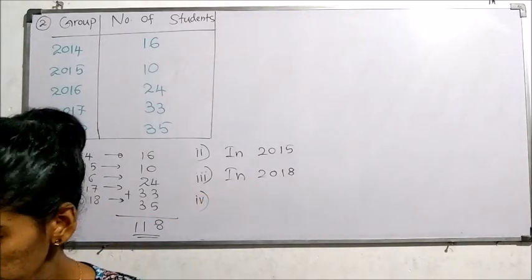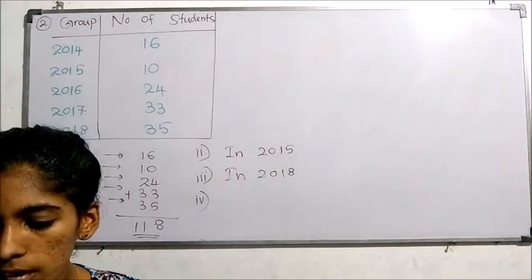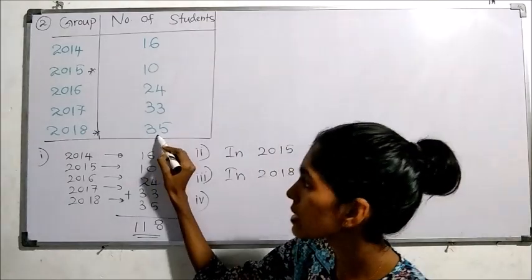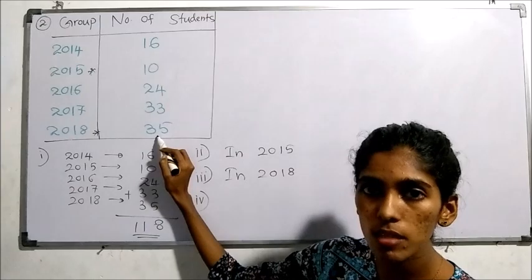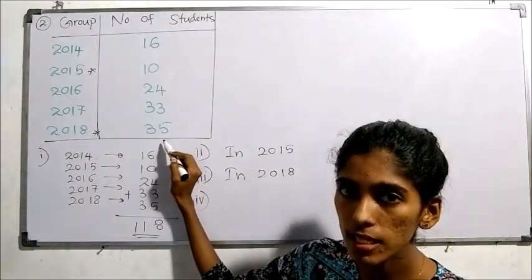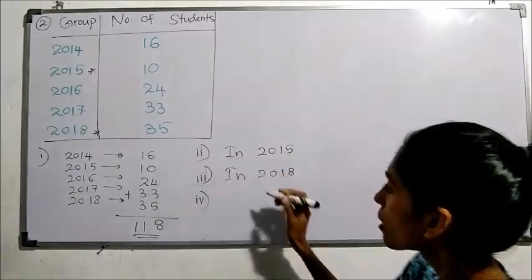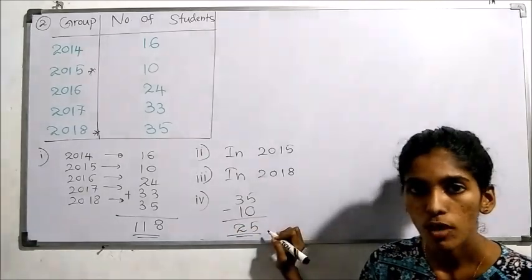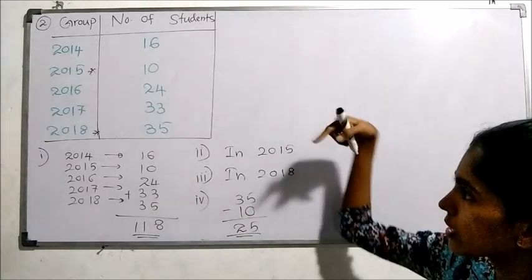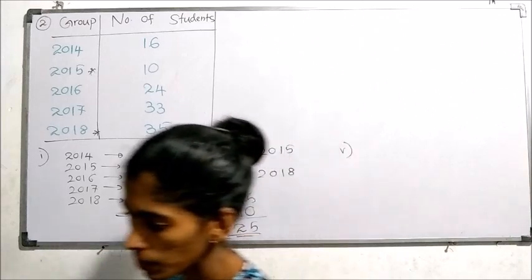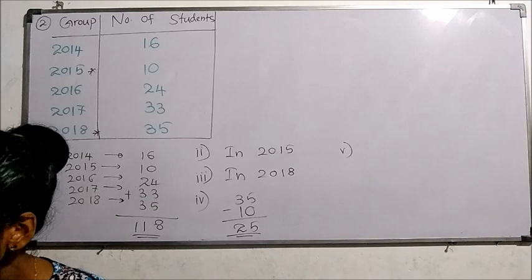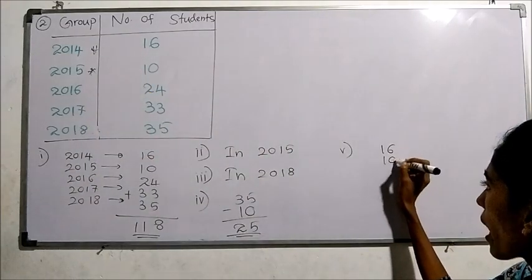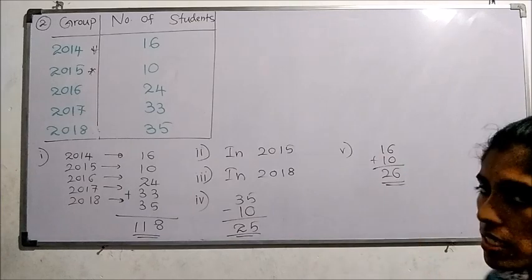Question 4: how many more students passed in 2018 than in 2015? We can see the number in 2018 is greater than 2015, so they are asking the difference. We subtract 10 from 35, giving 25 students. 25 more students passed in 2018 than in 2015. Question 5: find the total number of students who passed in 2014 and 2015. Adding those two years, 26 students passed in both years combined.